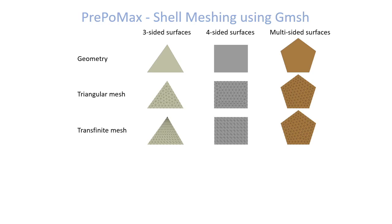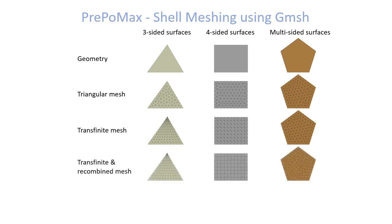This transfinite mesh constraint only works for three-sided and four-sided surfaces — it doesn't work for multi-sided surfaces. The next step to get an even better mesh is a transfinite and recombined mesh. Recombination means the algorithm finds neighboring triangles that can be merged into one quadrilateral finite element. In three-sided and four-sided surfaces the mesh is structured and perfectly aligned with the sides of the surfaces.